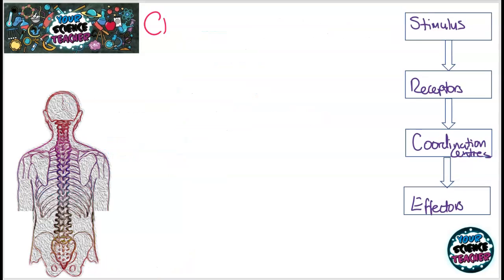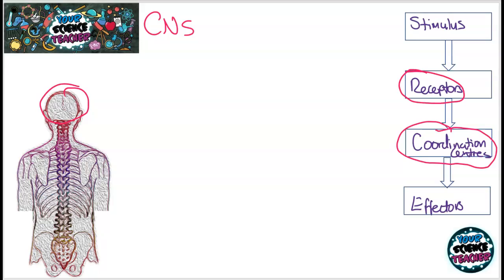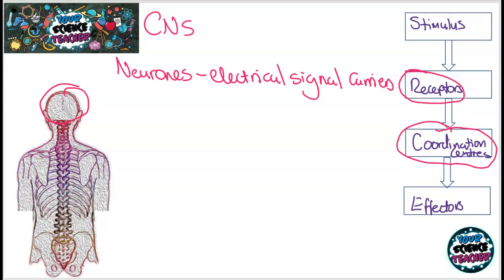The central nervous system is a great example of one of these coordination centers. It basically works on the principle of: once we've detected a change in environment through our receptors, how do we elicit a response? How do we get it to the brain where we can coordinate what response we should take? Once a change in the environment has been detected by the receptors, we need to turn that into an electrical signal. Electrical signals travel through the body through neurons. Our body is made up of two main types of neurons — the first is sensory neurons, which are attached to the receptors and carry the electrical signal to the spinal cord.